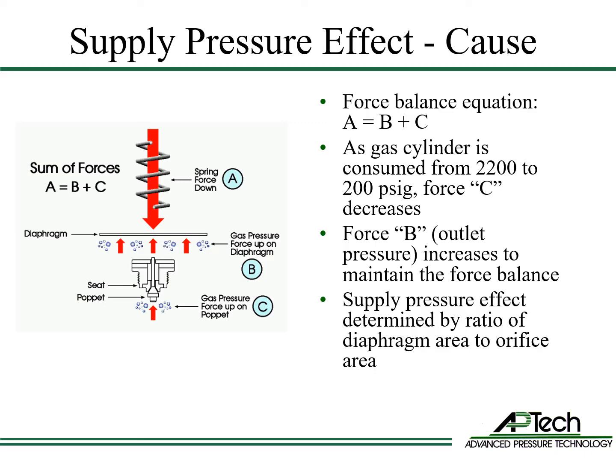In order to understand the causes of supply pressure effect, we will introduce the force balance equation. The downward force of the range adjustment spring is countered by the upward forces of the outlet gas pressure and the inlet gas pressure. As the gas cylinder is consumed from 2200 psi to 200 psi, force C decreases. For the sum of forces to be balanced, force B needs to increase as force C is decreased due to lower pressure. The supply pressure effect is determined by the ratio of diaphragm area to orifice area. Higher flow regulators generally have a lower ratio of diaphragm area to orifice area and therefore generally have higher supply pressure effect than lower flow regulators.